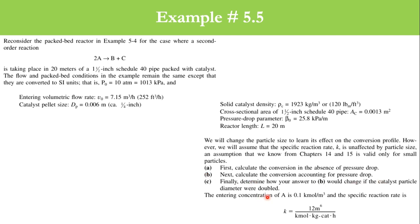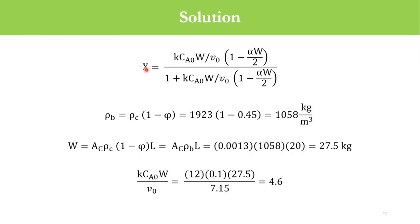if the catalyst particle diameter is doubled. The value of K is 12 meter to the power 6 divided by kmol·kg of catalyst. Because it's a packed bed system, minus rA prime will be used.